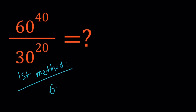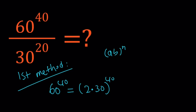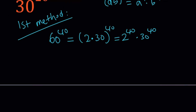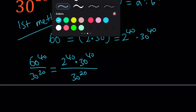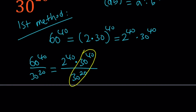First of all, I can write 60 to the power of 40 as 2 times 30 to the power of 40, since 60 can be written as 2 times 30. We have a nice rule: AB to the power of N — AB being a product — can be written as A to the N times B to the N. So I can write this as 2 to the power of 40 times 30 to the power of 40, and plug it into our original expression: 2 to the power of 40 times 30 to the power of 40 divided by 30 to the power of 20. Now I see the same bases, so the power rule tells us to subtract the exponents. We get 30 to the power of 40 minus 20, which is 20.